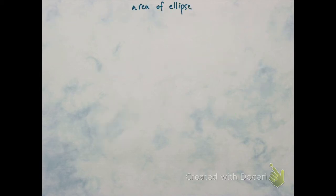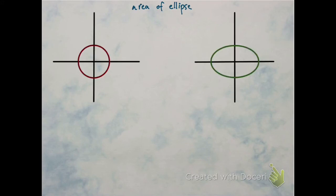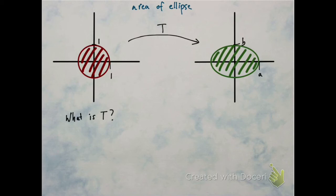So let's use that theorem to compute the area of an ellipse. I want to realize the ellipse as the image under a linear transformation of a set that I understand the area of.